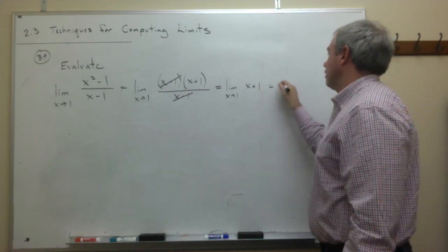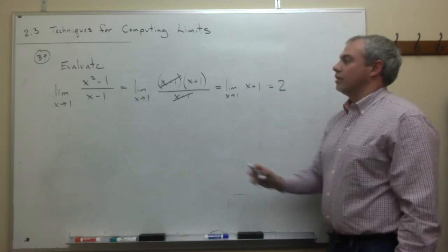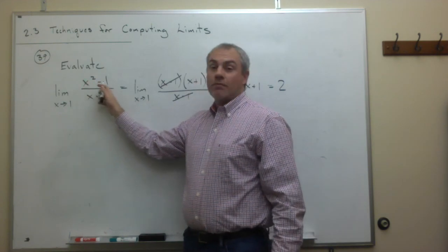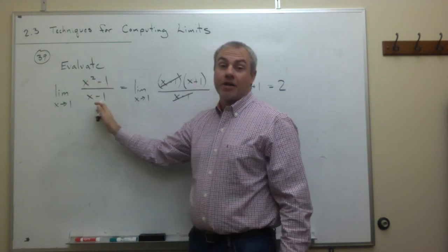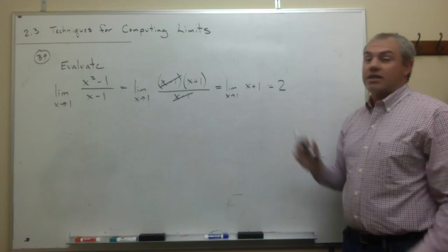So the limit as x goes to 1 of x squared minus 1 over x minus 1 is equal to 2.